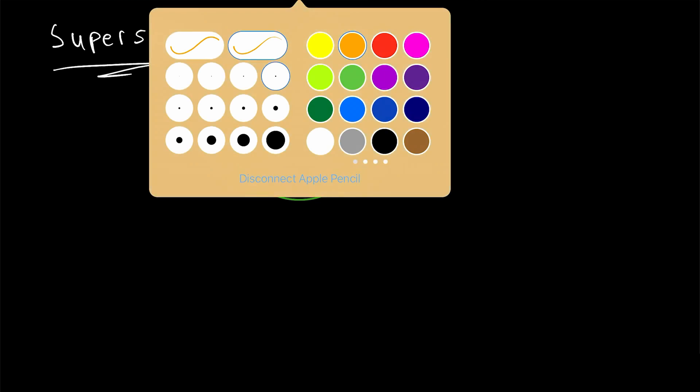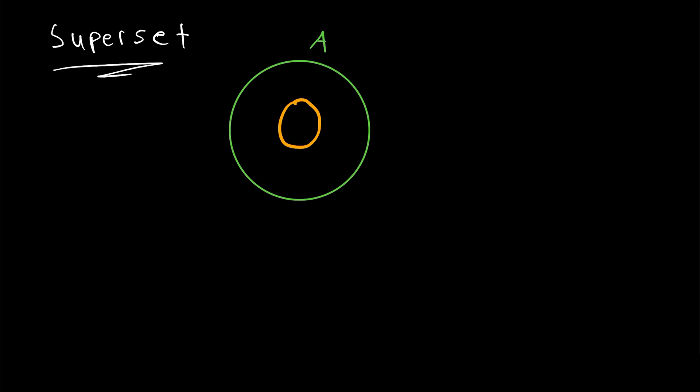Suppose we've got some set represented by this green circle, we'll call this set A. And suppose we've got some other set B, where every element of B is contained within the set A. Then you may recall that we say B is a subset of A, written like this.